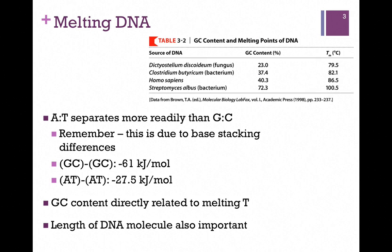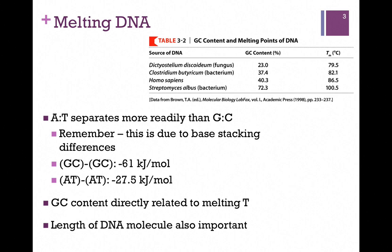If we look at the content of DNA, we find that DNA containing more AT-base pairs separates more readily than DNA containing more GC-base pairs. It's tempting to consider that this is due primarily to the hydrogen bonds — AT-base pairs form two hydrogen bonds and GC-base pairs form three — but remember, the stability has more to do with the base stacking differences.